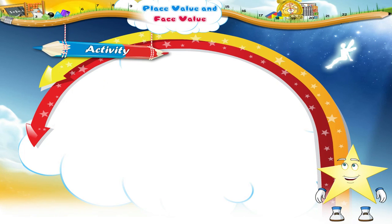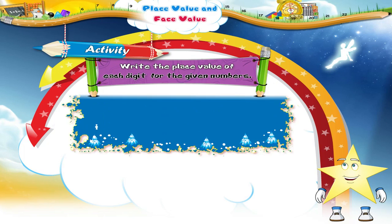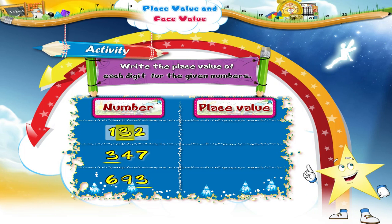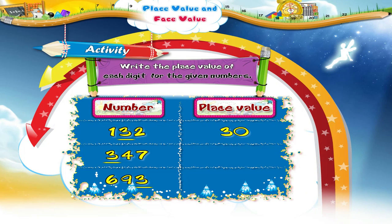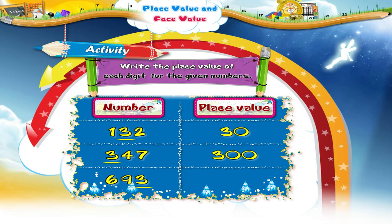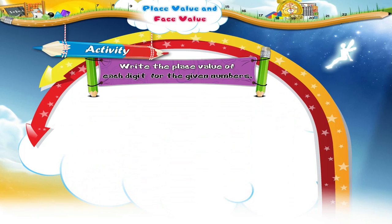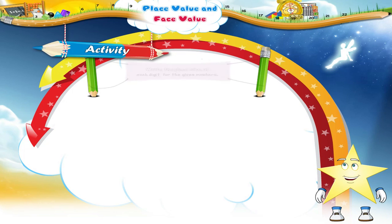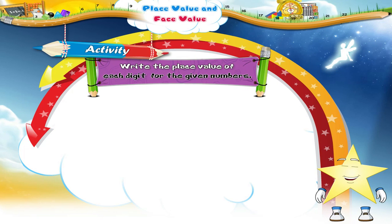Now let us do an interesting activity. Write the place value of three in each of the numbers. The place value of three in one hundred and thirty-two is thirty. The place value of three in three hundred and forty-seven is three hundred. The place value of three in six hundred and ninety-three is three.